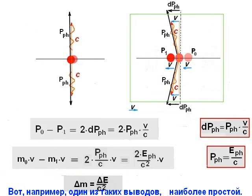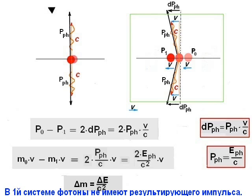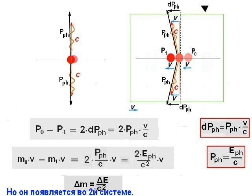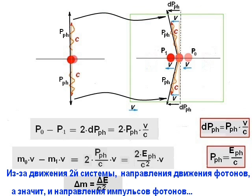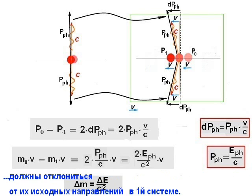That is, for example, another derivation, the most simple. In the first system, the photons have no resulting momentum, but it takes place in the second system. Due to motion of this system, the photon propagation directions, as well as the directions of the photon momenta, must deflect from their positions in the first system.